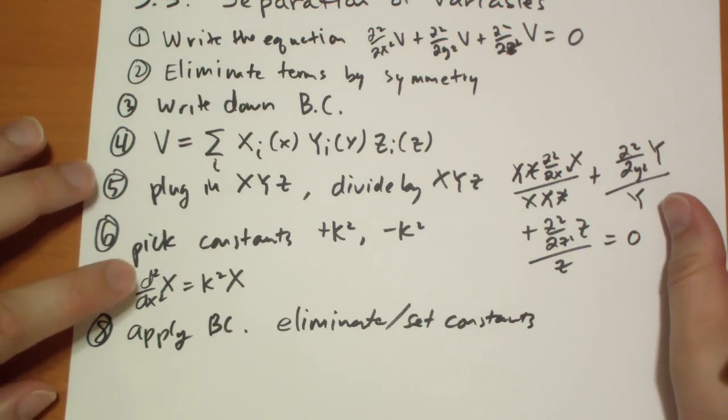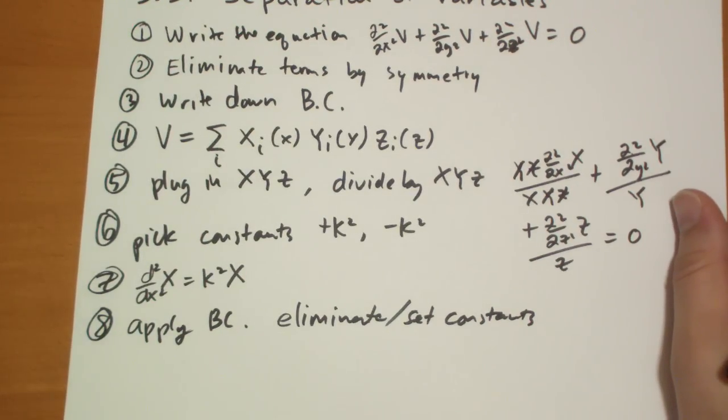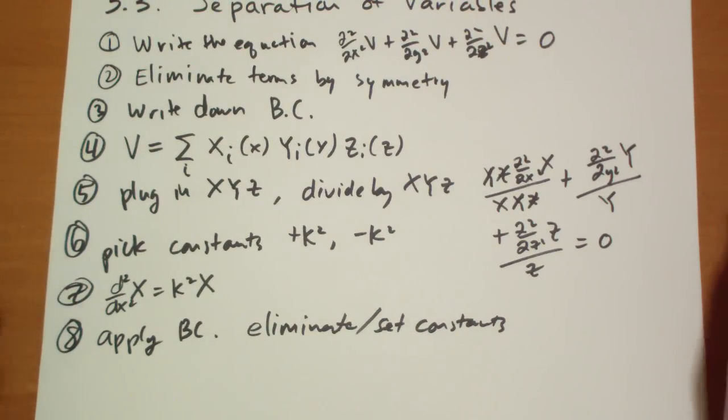you're going to have two constants. And so in Cartesian coordinates, you're going to have six constants altogether. Hopefully you can get rid of some of those to simplify your equation so it's reasonable.